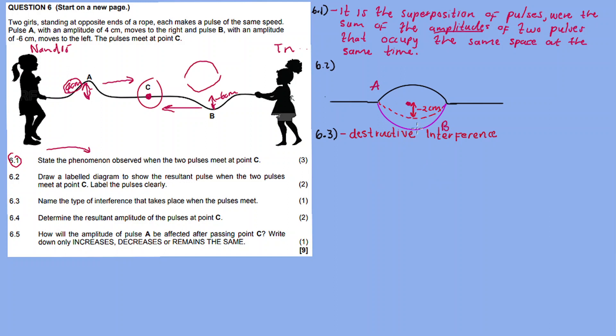6.4: Determine the resultant amplitude of the pulses at C. The amplitude is equal to plus 4 for pulse A plus negative 6 for pulse B, which gives us minus 2 centimeters.